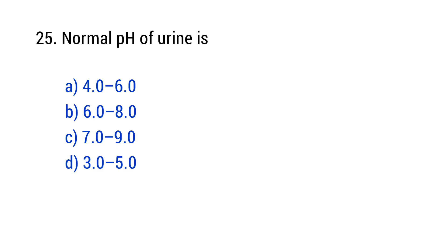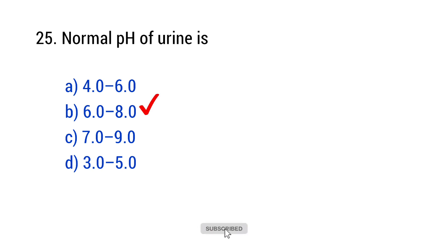Question number 25: Normal pH of urine is? The right answer is option B — 6.0 to 8.0.